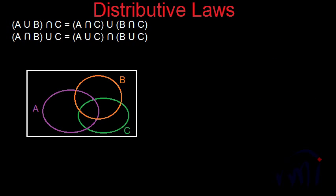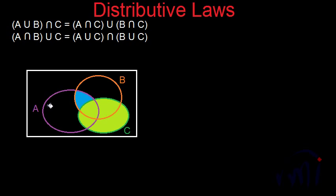Now let's understand the second distributive law, which says A intersection (B union C) is equal to (A union C) intersection (B union C). A intersection B is the overlapping area of ellipse A and ellipse B, shaded in blue. Set C is over here, and the union of A intersection B and C is represented by the whole area shaded in light green — that represents A intersection B union C.